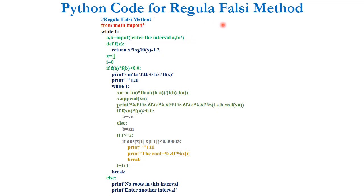Here is the Python code for the Regula Falsi method. We import the math module since the expression contains log. We start with an infinite loop, enter the assumed a and b values, and define the expression x·log(x) − 1.2. We initialize an empty list for x values and a counter i for the number of steps. If f(a)·f(b) is negative (opposite signs), we proceed; otherwise, we print 'no roots in this interval' and prompt for another interval.